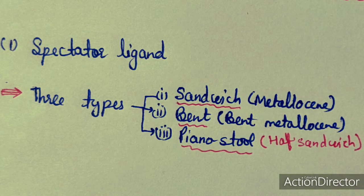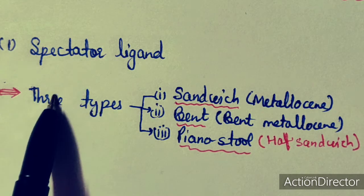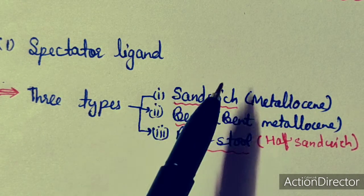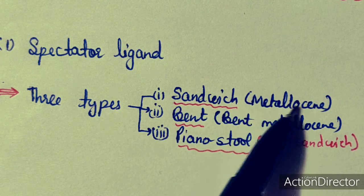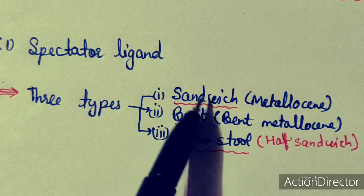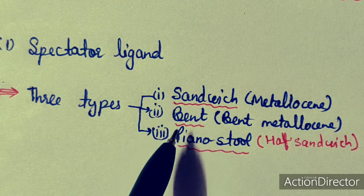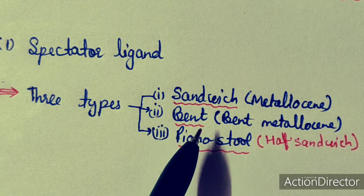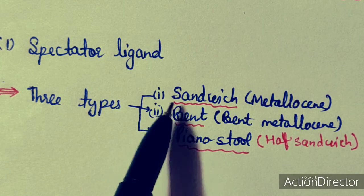On the basis of structure, cyclopentadienyl complexes can be divided into three types. The first type is sandwich, generally known as metallocene. In a sandwich, two cyclopentadienyl rings are present on the upper and lower sides, and the metal ion is sandwiched between them. This is known as sandwich metallocene.